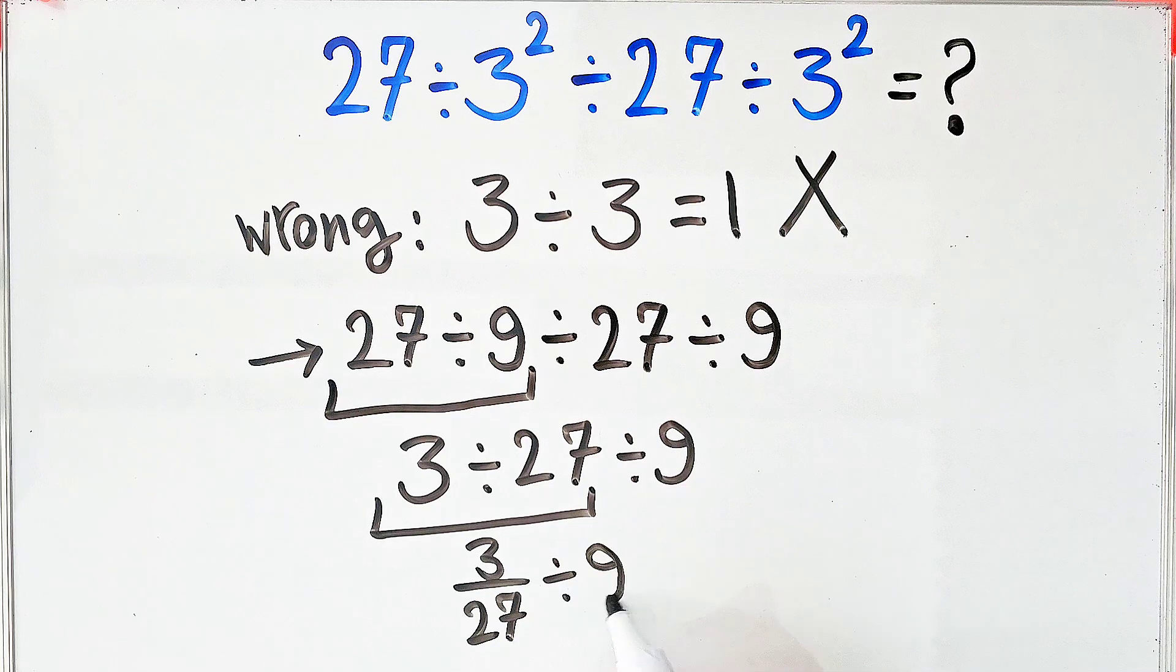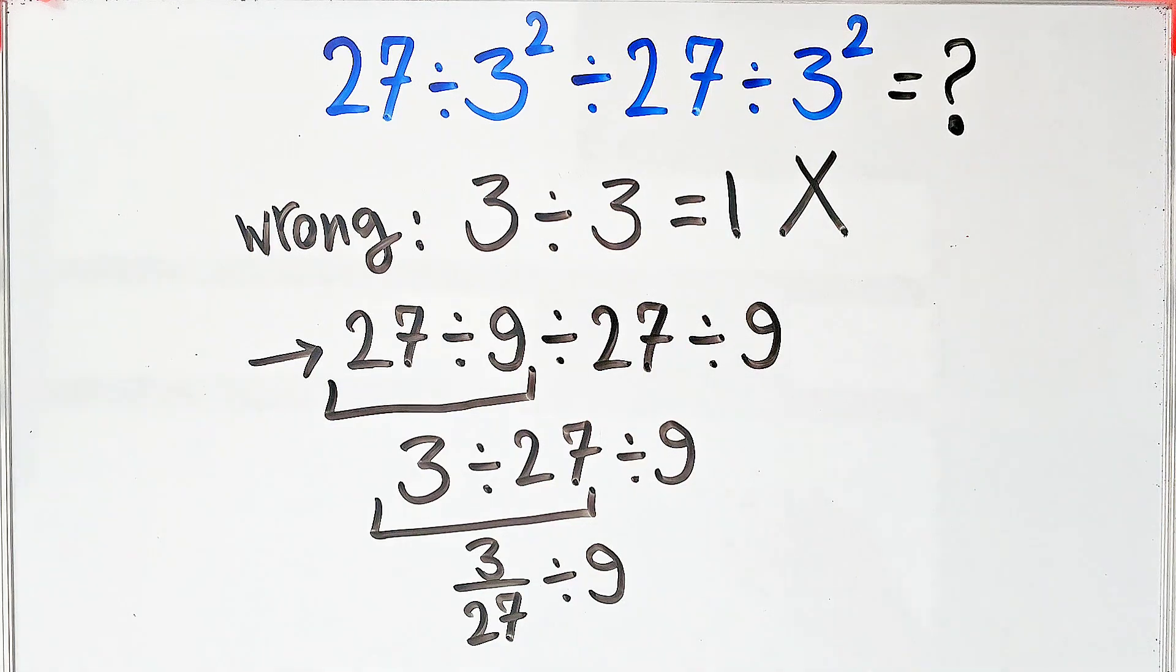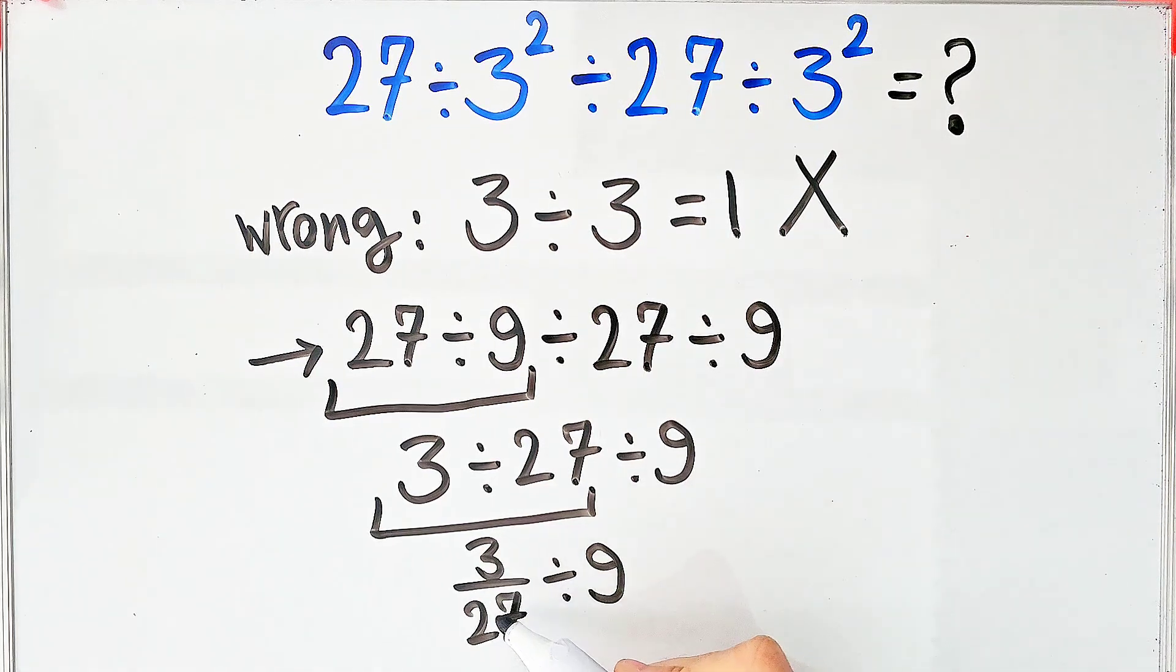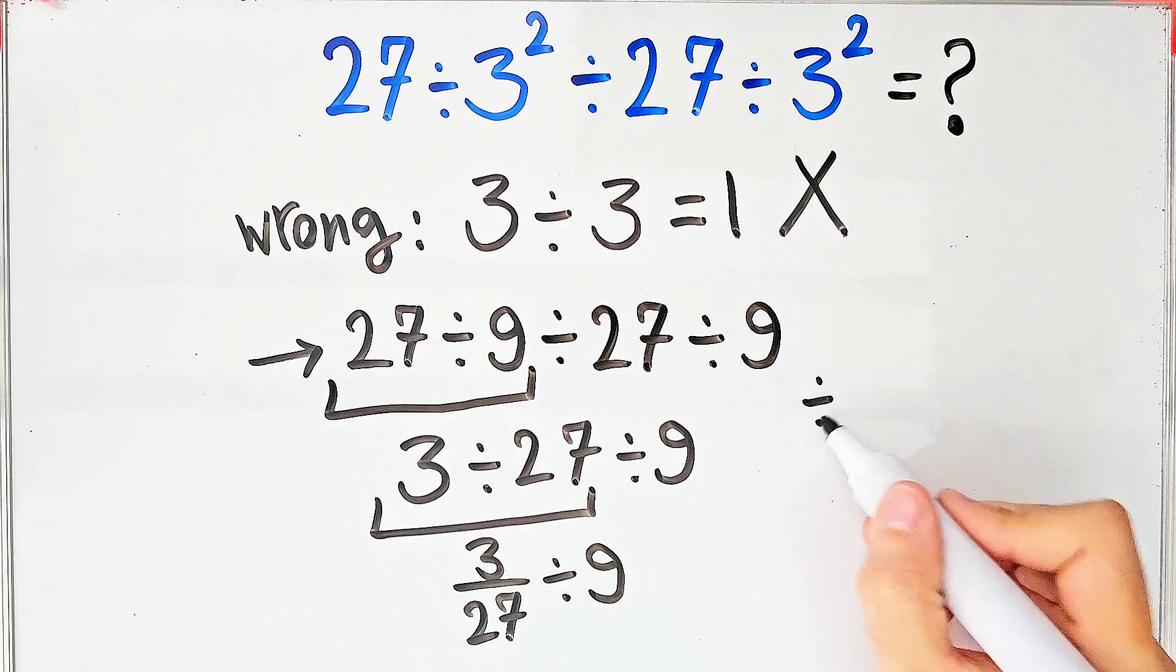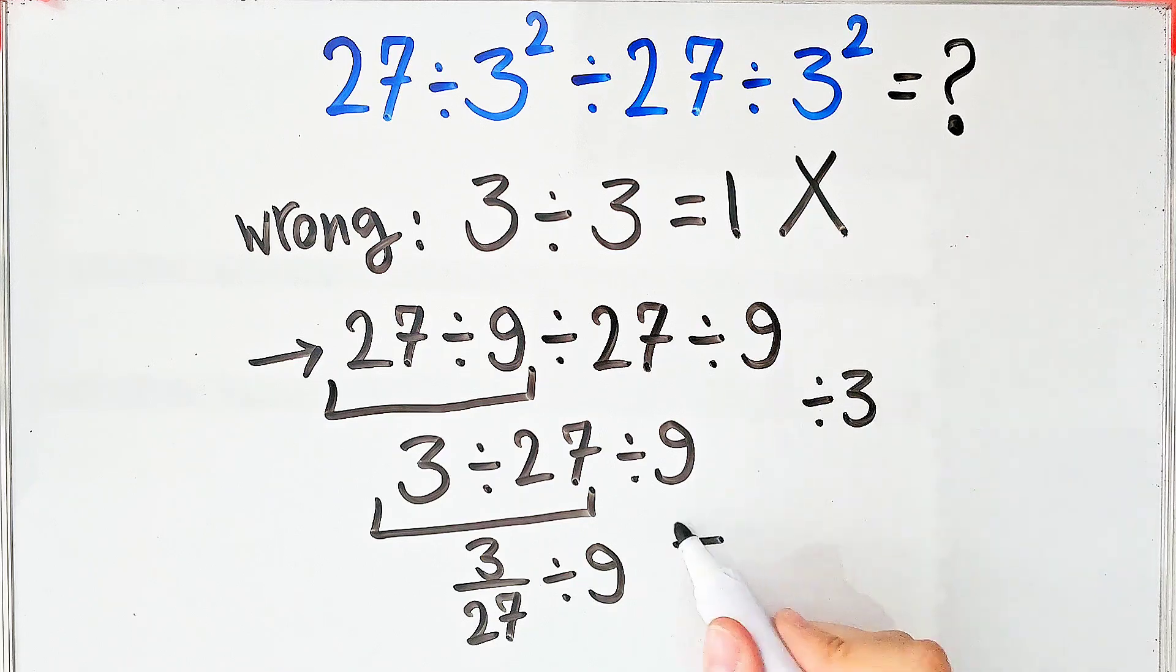Because the numerator and the denominator of this fraction are divisible by 3, we divided both by 3. Now we have 1 over 9 divided by 9.